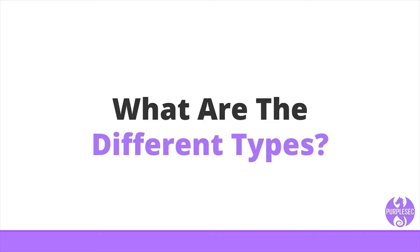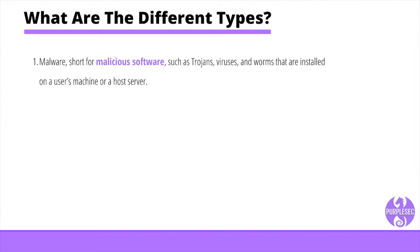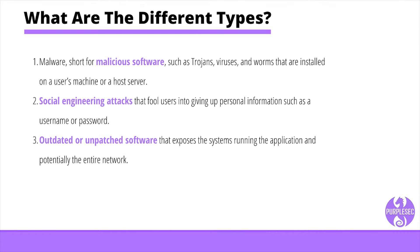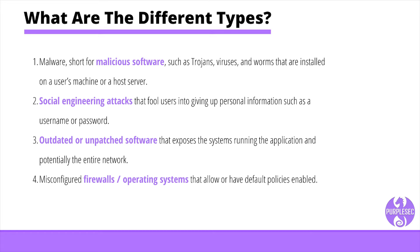What are the different types of network vulnerabilities? Network vulnerabilities come in many forms, but the most common types are: 1. Malware, short for malicious software, such as trojans, viruses, and worms, that are installed on a user's machine or a host server. 2. Social engineering attacks that fool users into giving up personal information such as a username or password. 3. Outdated or unpatched software that exposes the systems running the application and potentially the entire network. 4. Misconfigured firewalls or operating systems that allow or have default policies enabled. It's important that your network security team addresses these factors when assessing the overall security posture of your systems.